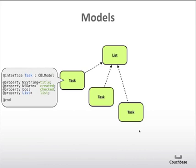So we implement task as a subclass of CVLModel and we create some properties for the obvious attributes of the title, the creation date, the checked property, and then finally which list it belongs to.